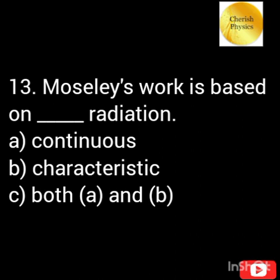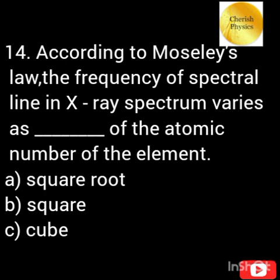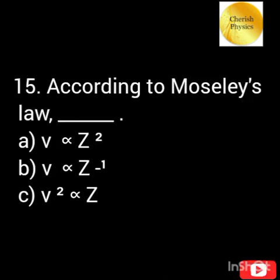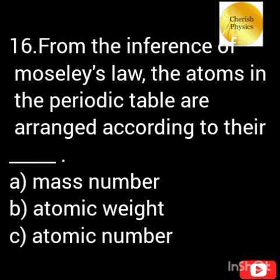Moseley's work is based on what radiation? The frequency of the spectral line in the X-ray spectra varies as dash of the atomic number of the element, according to Moseley's law. The atoms in the periodic table are arranged according to their?